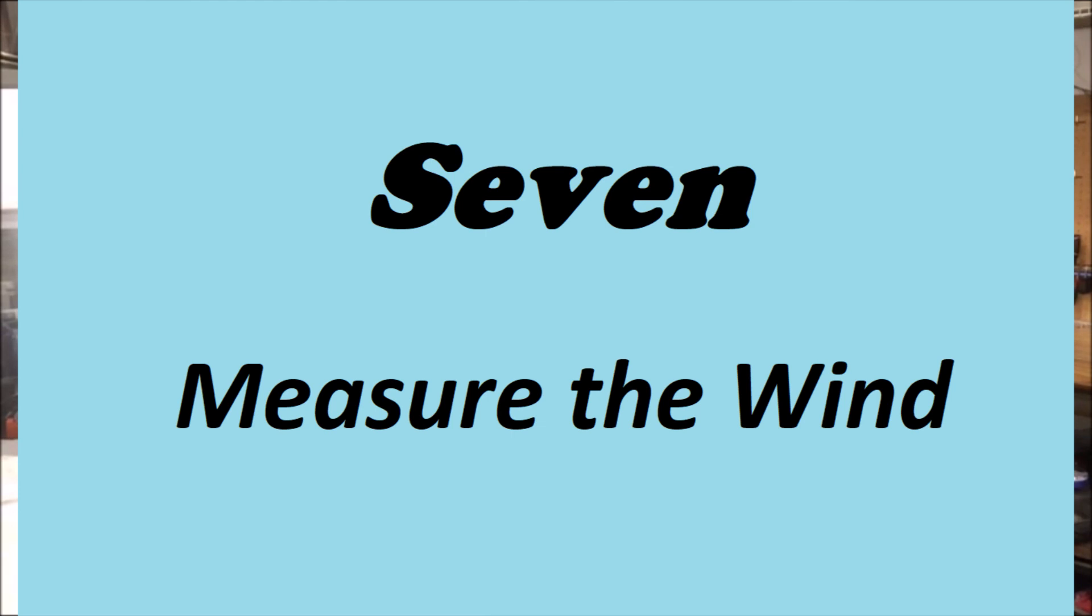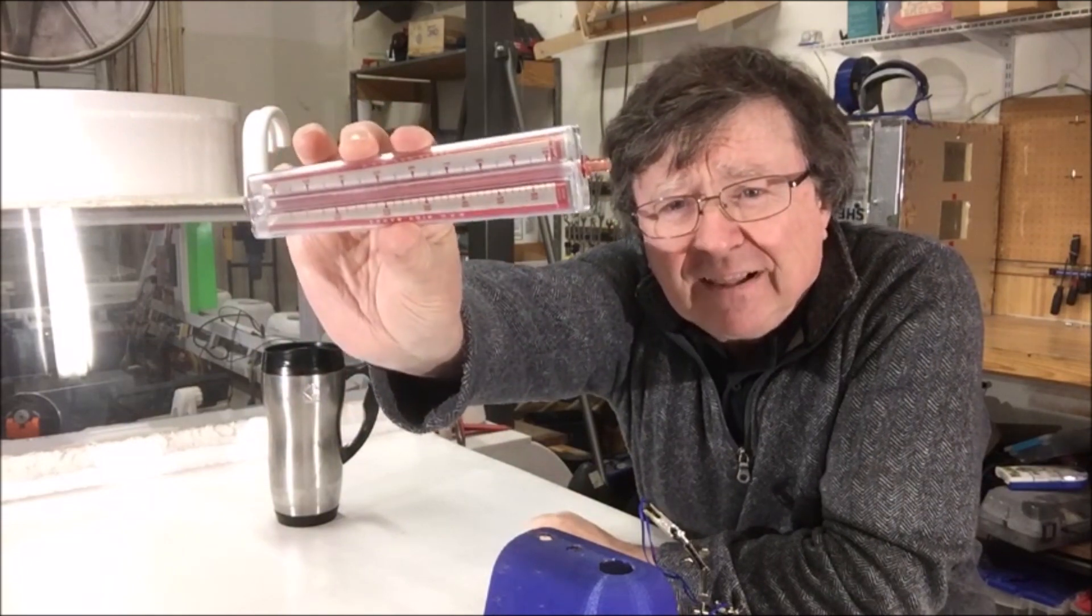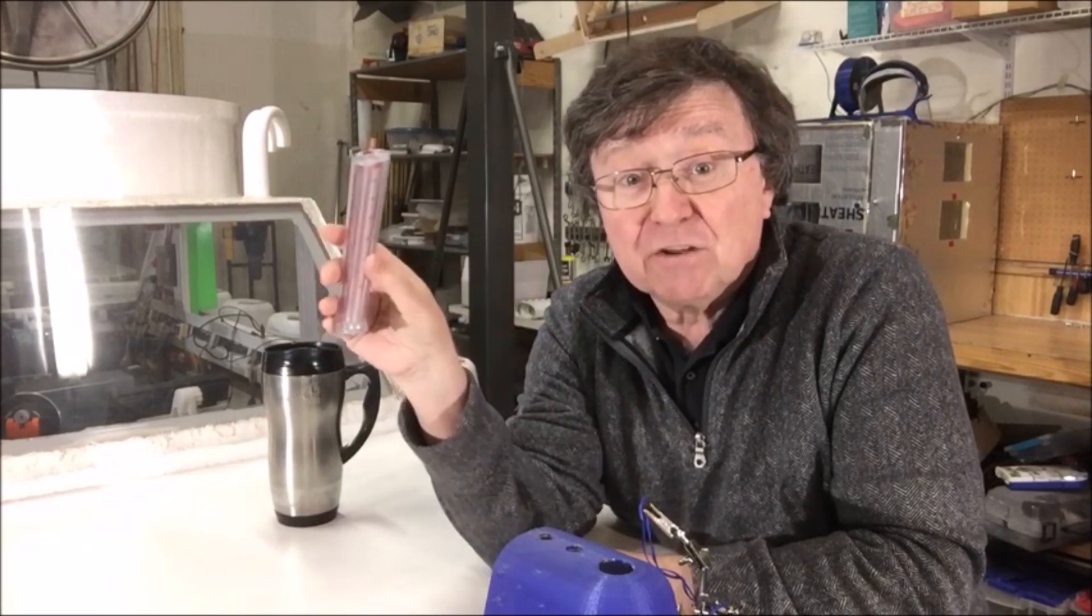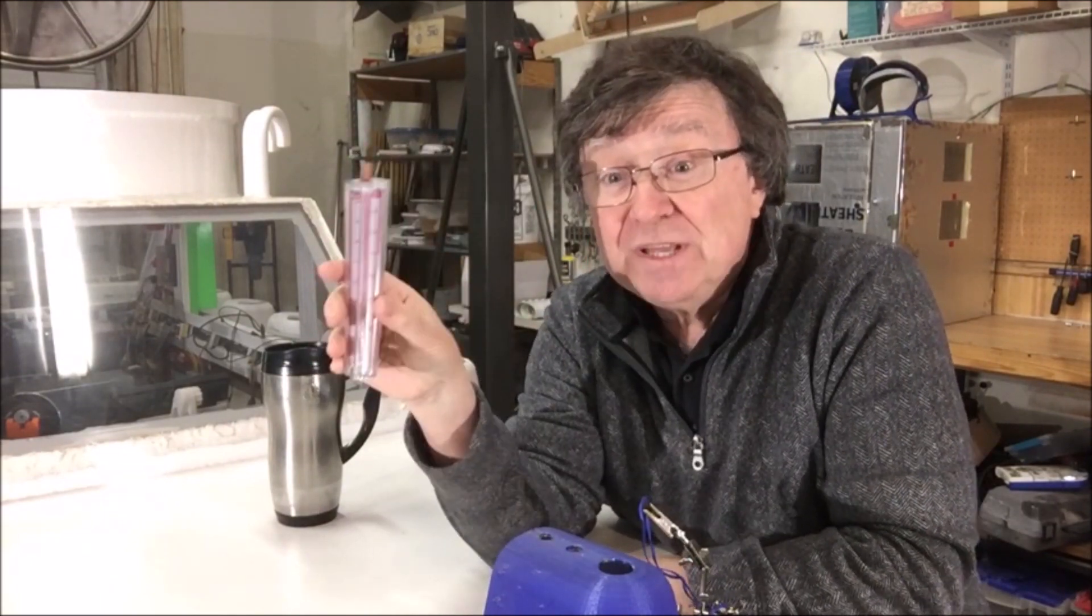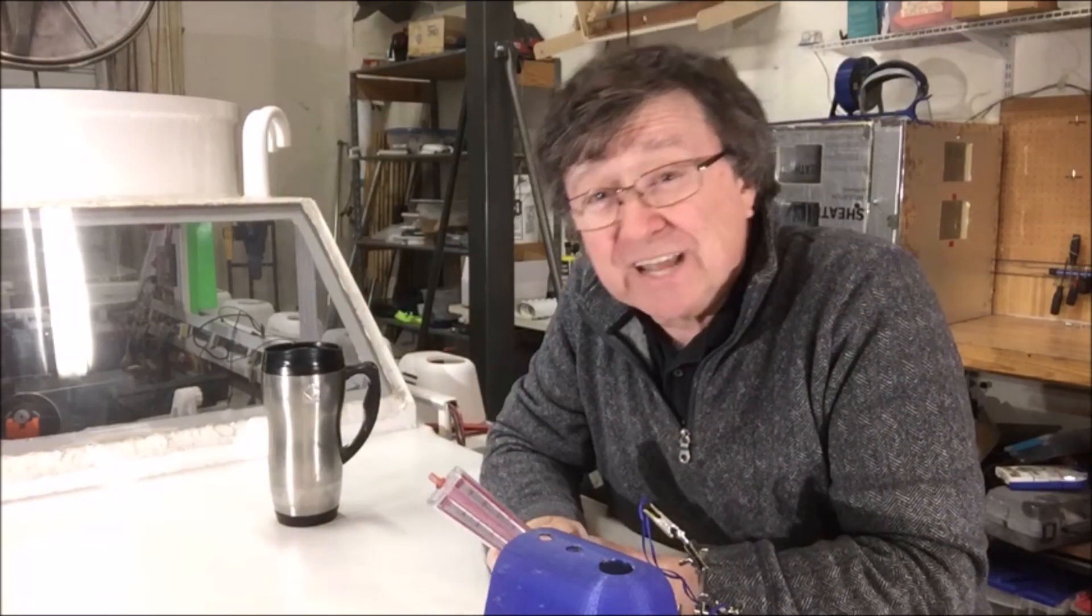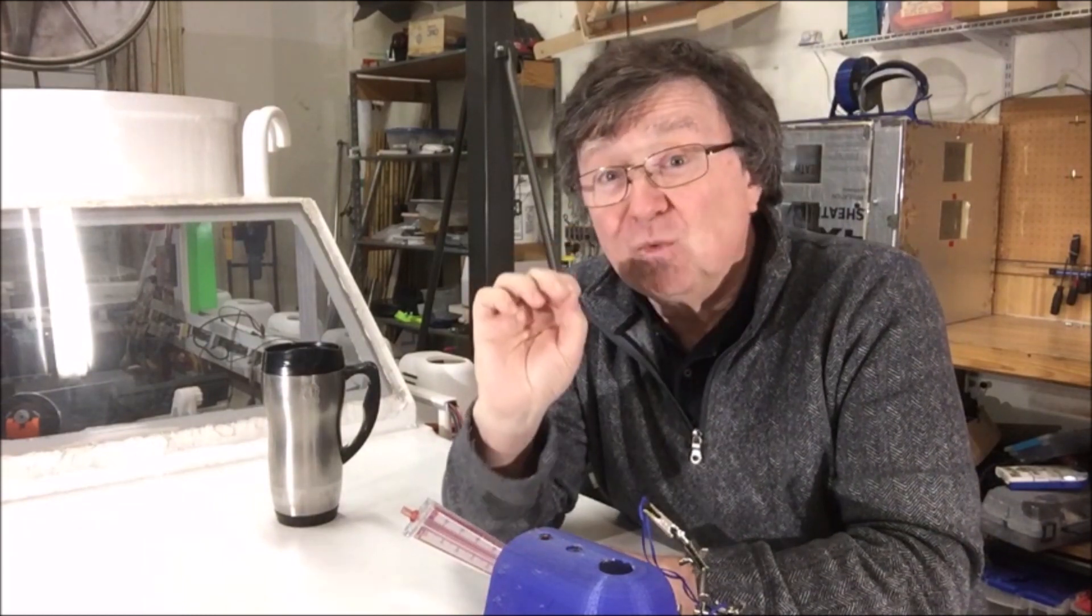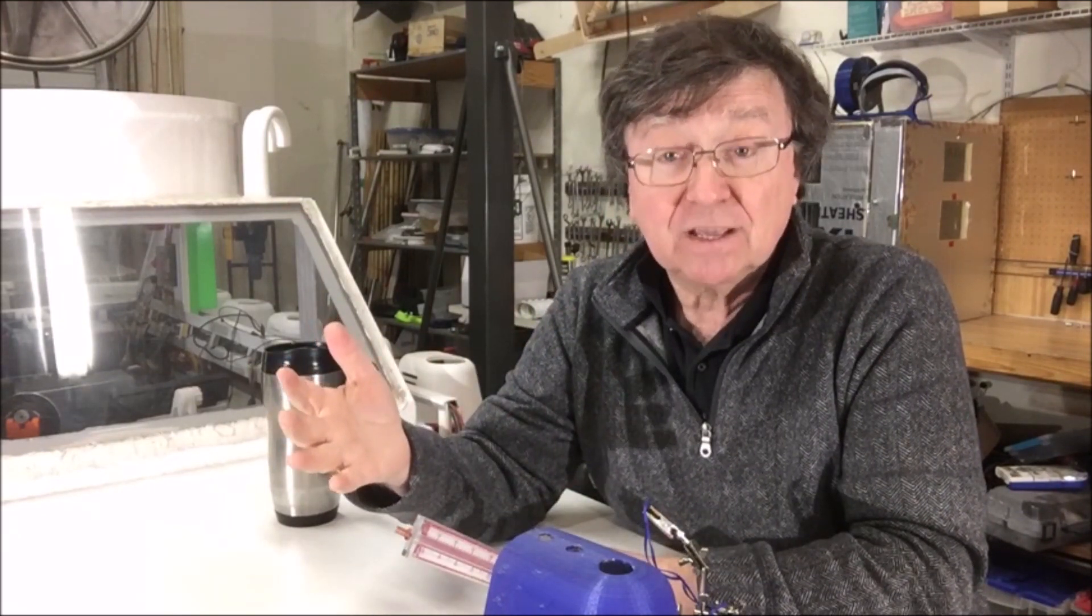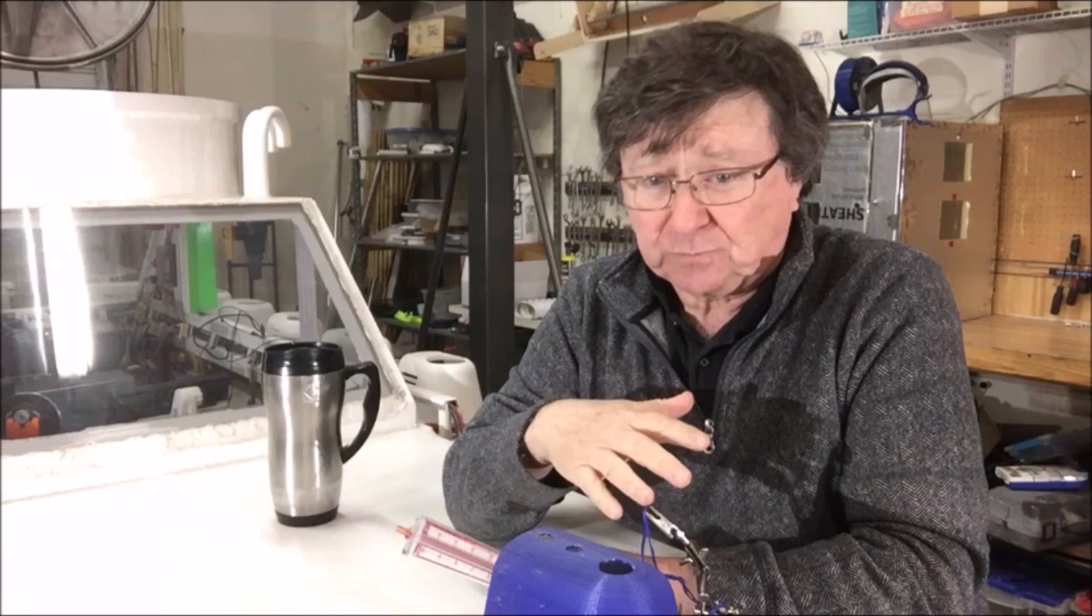Number 7, measure the wind. Get an inexpensive wind meter like this one. A week before your flight, start carrying it around. Pull it out a few times a day and measure the wind. Guess what the wind is going to be and give it a try. You're going to be surprised at how often you're wrong. On launch morning, measure the wind and write it down on your checklist. After a while, you'll get to know what is an acceptable wind for flight and what is not. Be your team's wind guru.